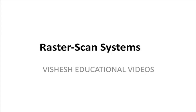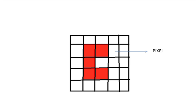Welcome to this educational video explaining raster scan systems, an important topic in computer graphics. Before explaining what a raster scan system is, you need to understand what a raster picture is and the process of scan conversion. A raster scan system produces the image in the form of pixels. The process of producing the image in the form of pixels is known as scan conversion. The pixel is the smallest unit of the image.